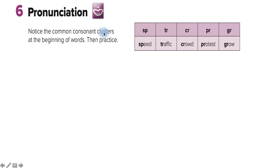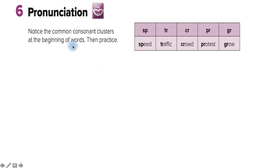Now let's move on to the pronunciation part. You are supposed to notice the common consonant clusters at the beginning of words and practice pronouncing them. Listen: SP — speed; TR — traffic; CR — crowd; PR — protest; GR — grow. Practice pronouncing these common consonant clusters.